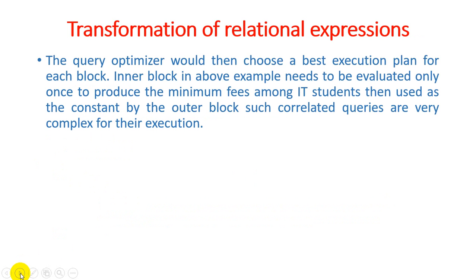The query optimizer then selects the best execution plan for each block. The inner block in the above example needs to be evaluated only once to find the minimum fees among IT students, then used as a constant by the outer block. Such correlated queries are very complex for execution. Whenever your query is complex or nested, the first step is to decompose it and generate simple query results, as we did by splitting into two sub-queries.